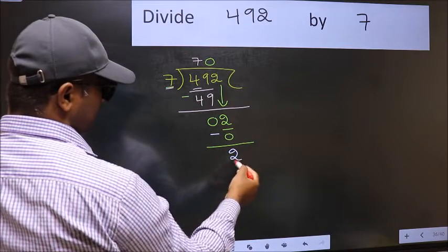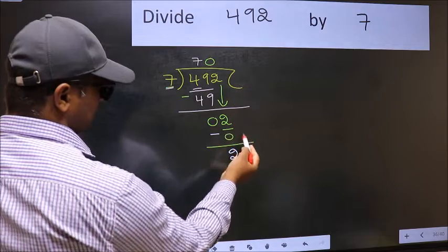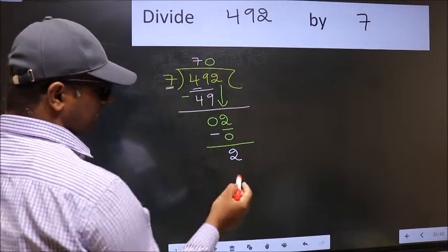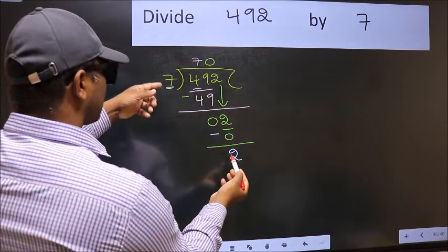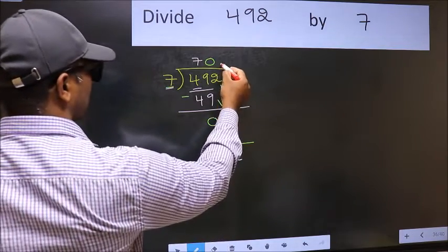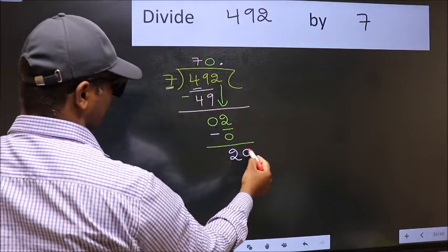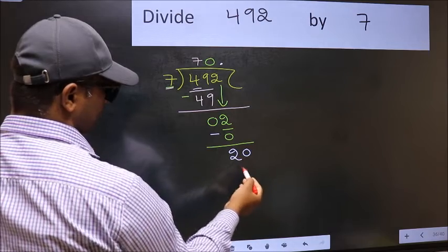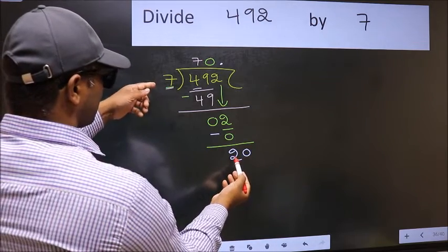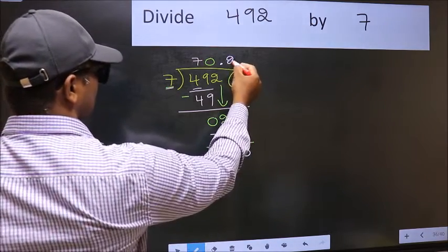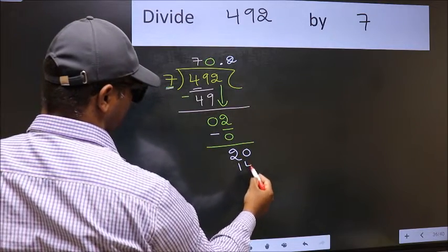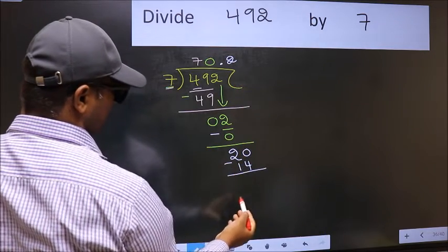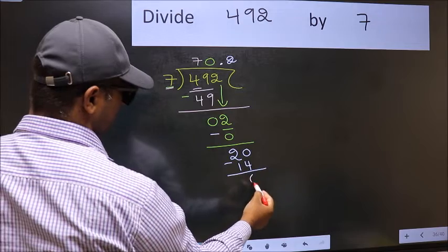Over here, we did not bring any number down. And 2 is smaller than 7. So now you can put dot and take 0. So 20. A number close to 20 in 7 table is 7 twos, 14. Now you should subtract. 20 minus 14, 6.